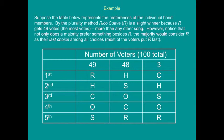Looking at the full preferences: the 49 R-first voters rank R, H, C, O, S in that order. The 48 H-first voters rank H, S, O, and so on. The 3 C-first voters rank C, H, and so on. By plurality, you only vote for your first choice, so R wins with 49 votes, H gets 48, and C gets 3. Whoever has the most votes is the winner — in this case, R.